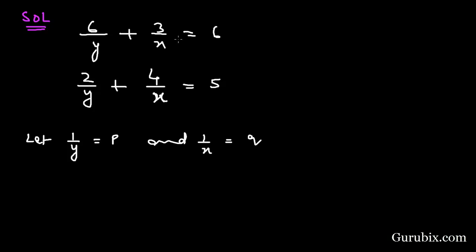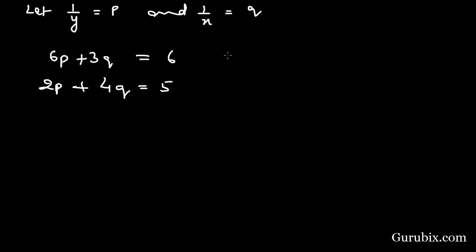Now we let 1 over y equal to p and 1 over x equal to q. Therefore, the first equation becomes 6p plus 3q equals 6, and the second equation becomes 2p plus 4q equals 5. This is equation number 1 and this is equation number 2.